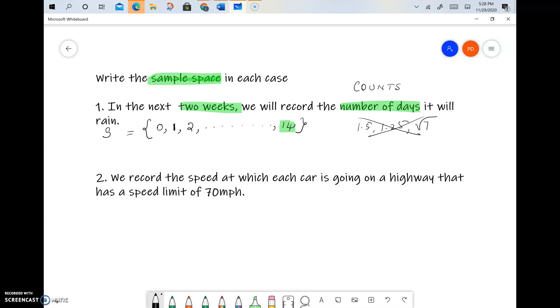So the next question, it says we record the speed at which each car is going on a highway that has a speed limit of 70 miles per hour.